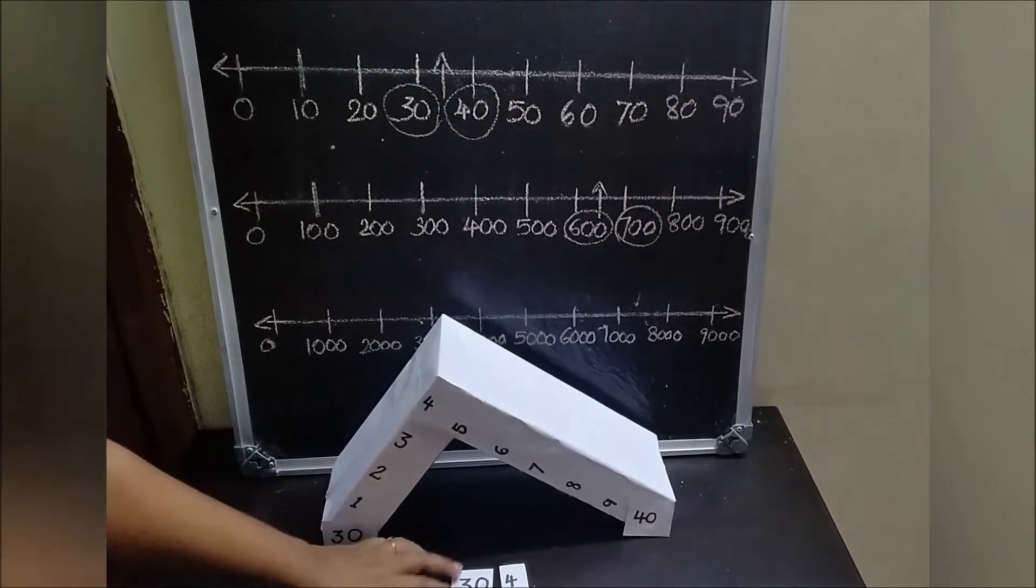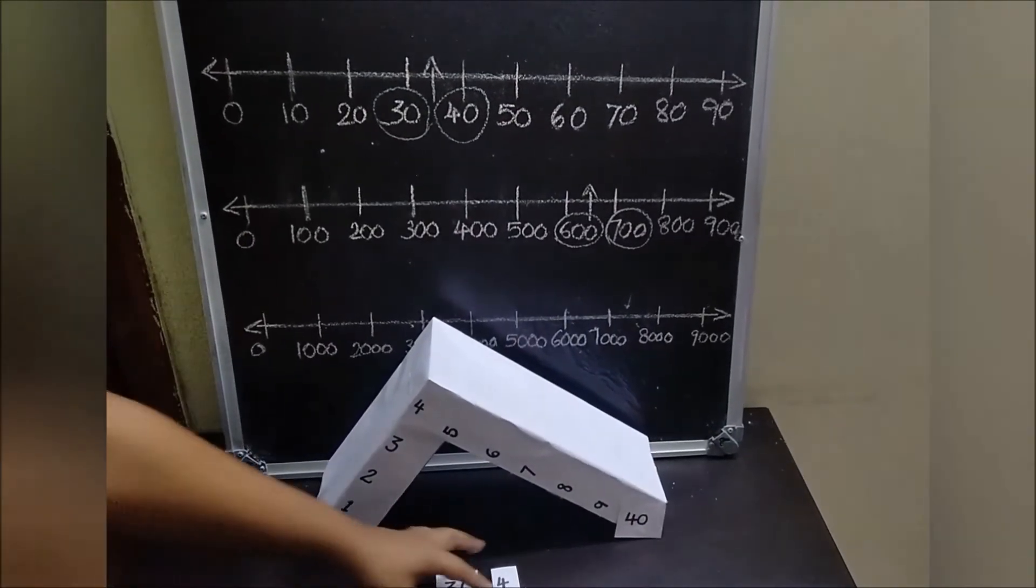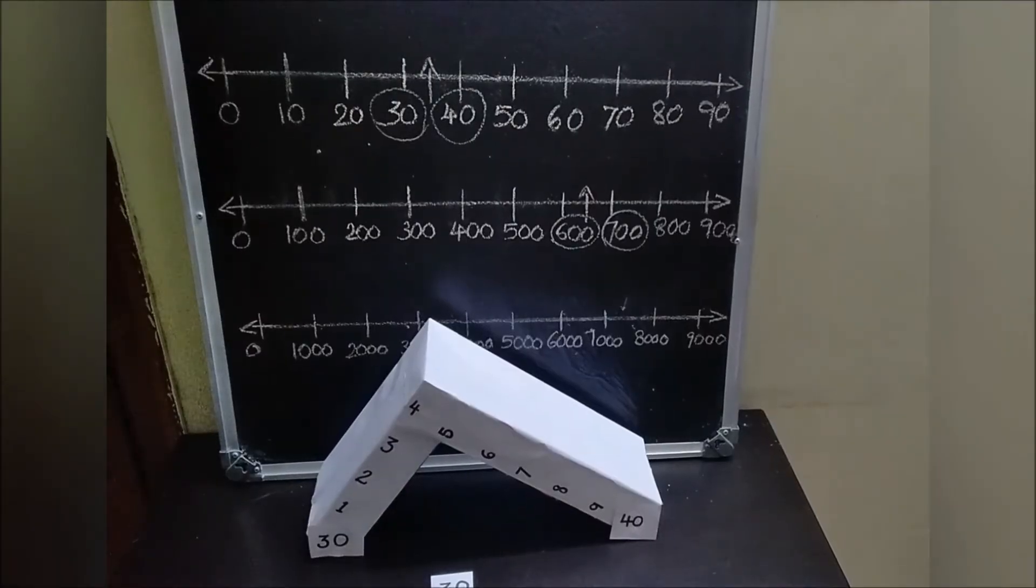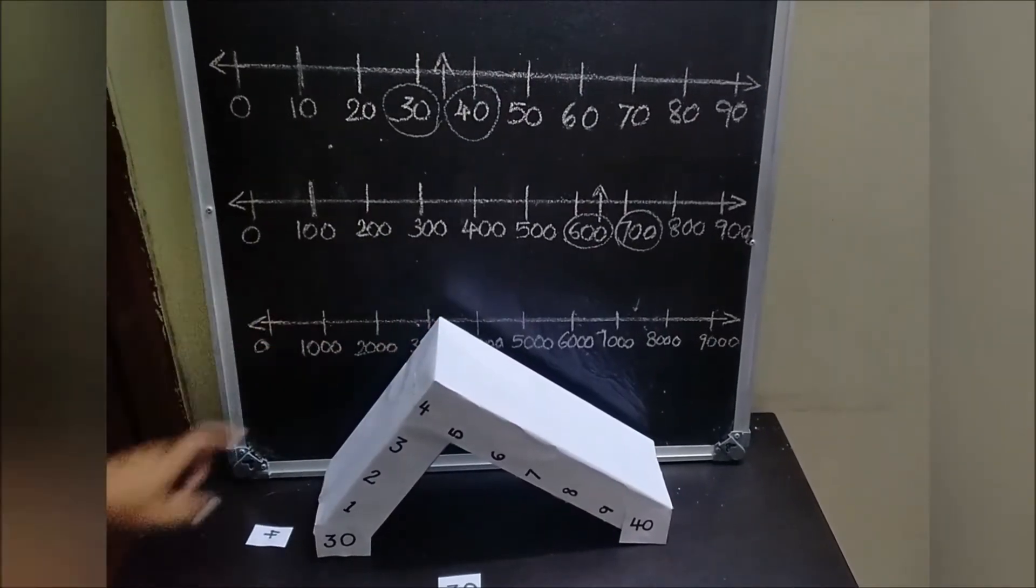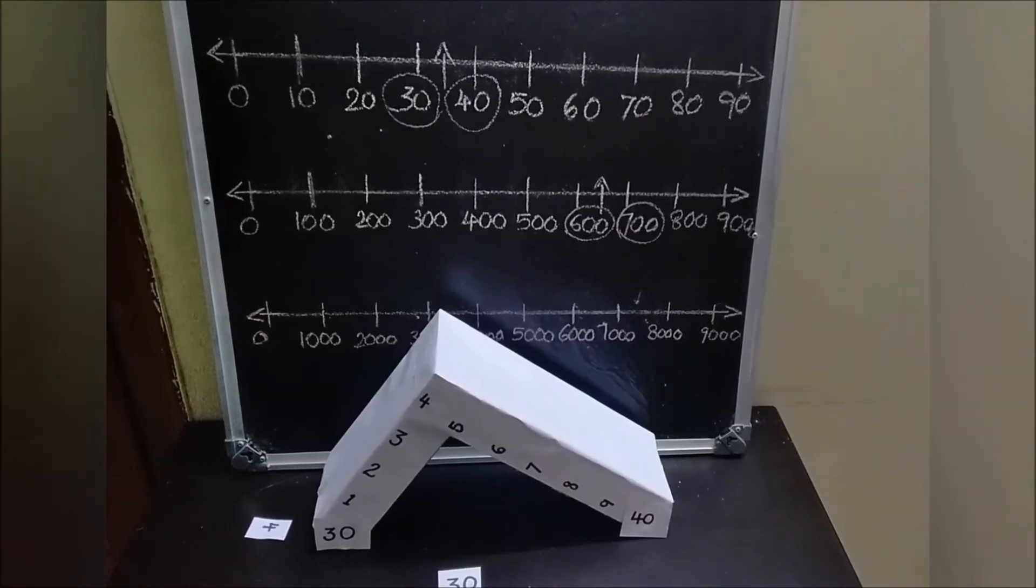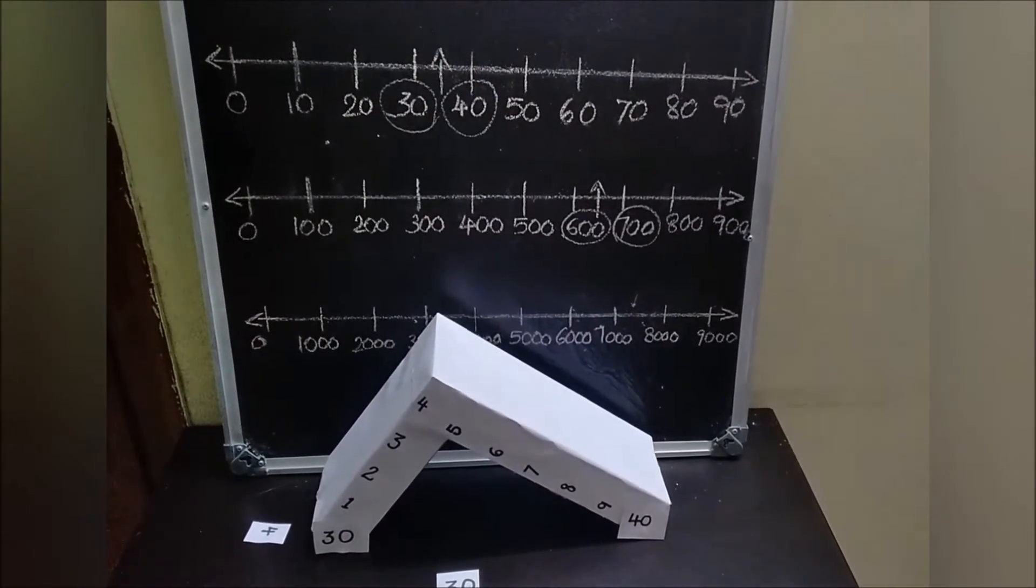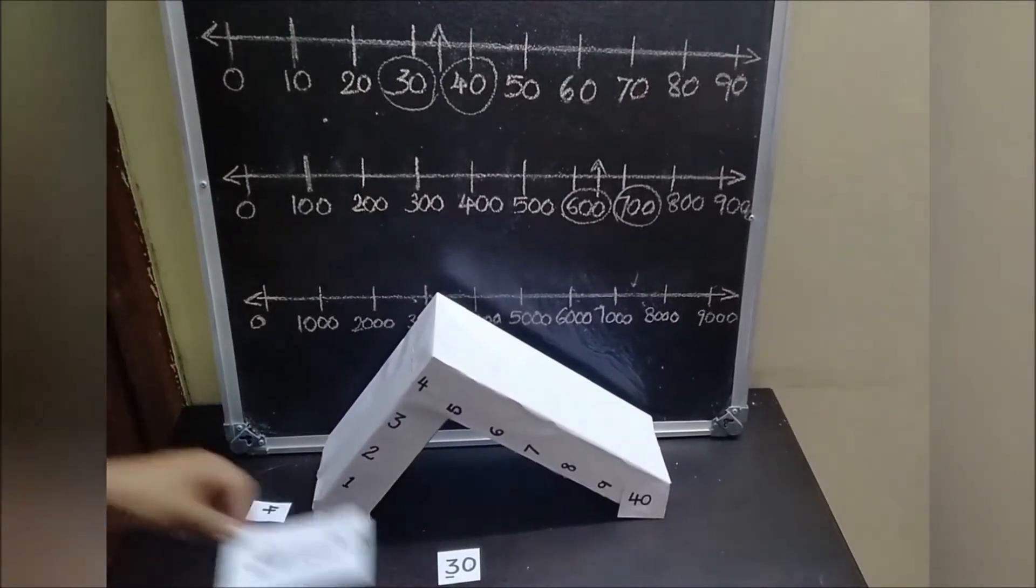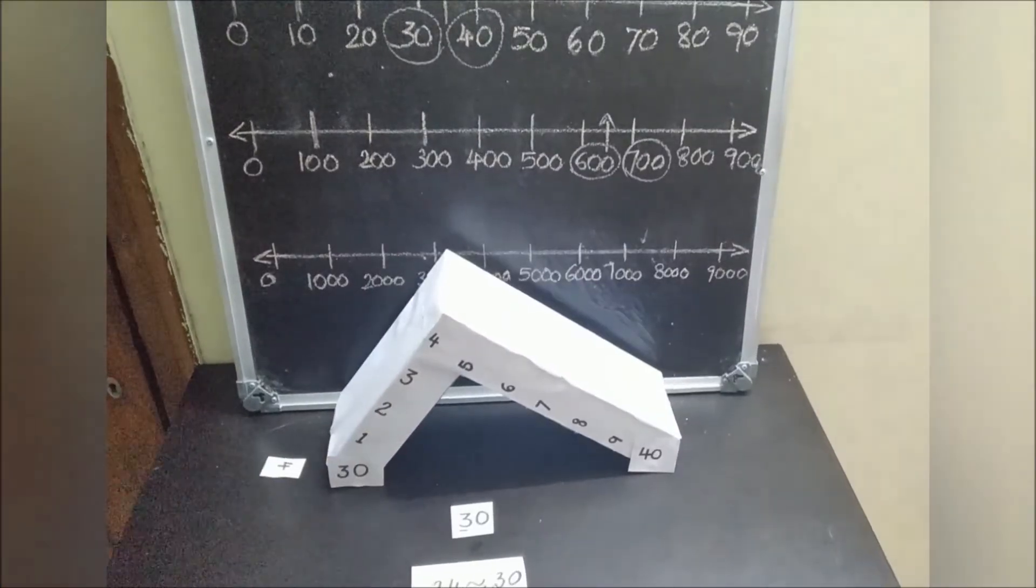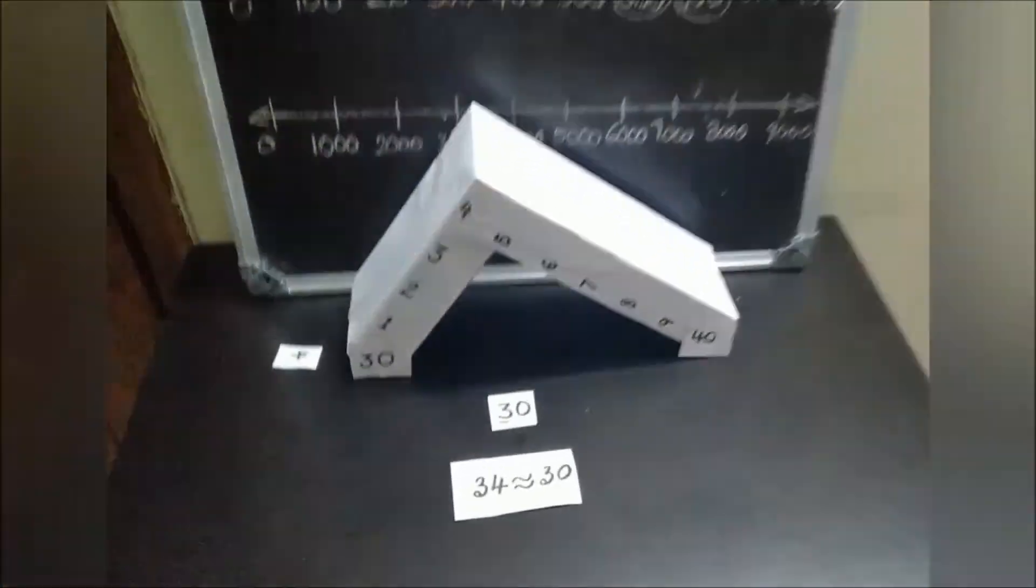Here, 34 is equal to 30 plus 4. Here, I am taking this 4 and keeping it on the slide. It slides towards 30. That means 34 can be rounded off to 30 when we estimate it to the nearest tens. Here, we rounded down 34 to 30. 34 is approximately equal to 30.